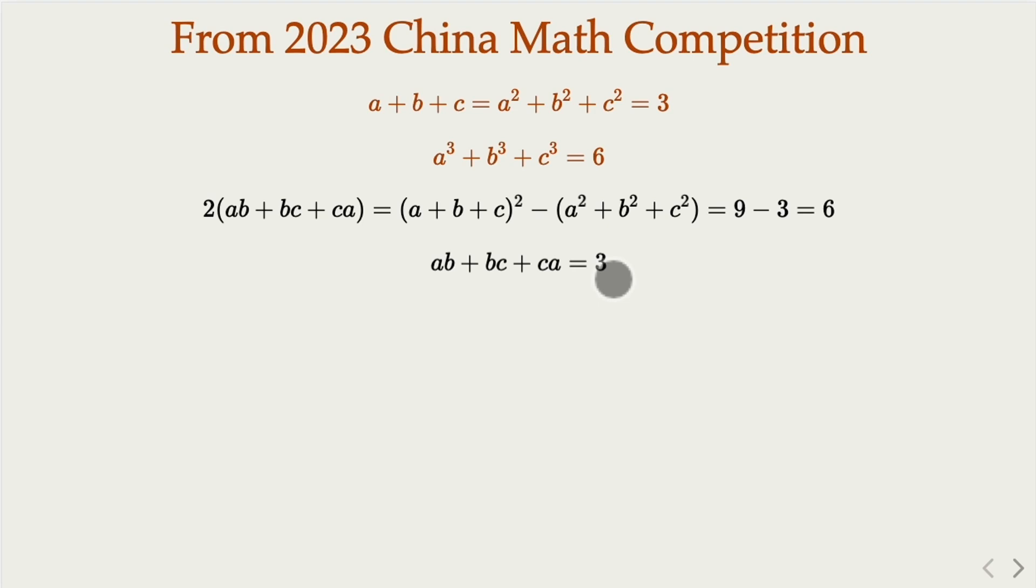Now, here we apply the Vieta formula, given the fact that the pairwise product sum is equal to 3, and the sum equal to 3. We claim that ABC are three roots of a cubic equation, right? Here, with coefficient D unknown, right?